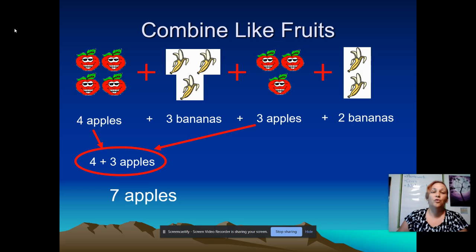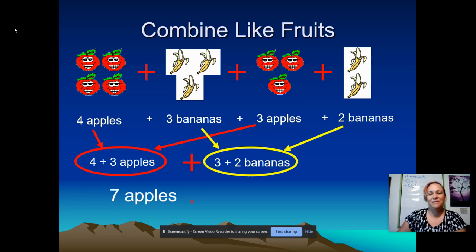Notice that I only added together the four and the three. I did not change the word apples. Then I'm going to take my three bananas and my two bananas and I'm going to put them all together in one pile and that makes a total of five bananas. Again, I only added the three and the two. The word bananas stayed the same. For combining like terms, we're going to do something very similar to that.